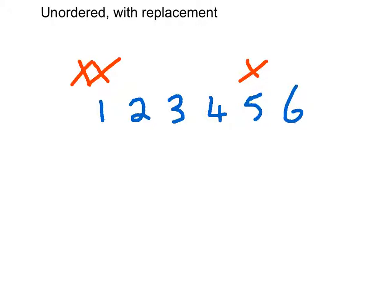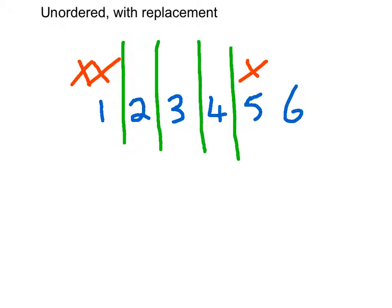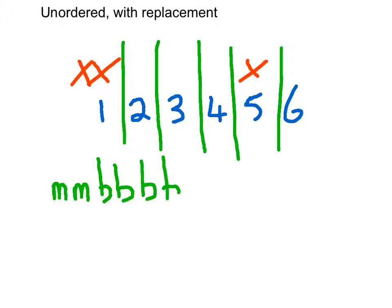But this time we want to count the possibilities where we don't care about the ordering — maybe we got the five first and then the one, or a one then a five then a one. The simplest way to think about this is to use a trick where we divide the space into bins. We have a set of markers and boundaries, and we don't care about the end boundaries.